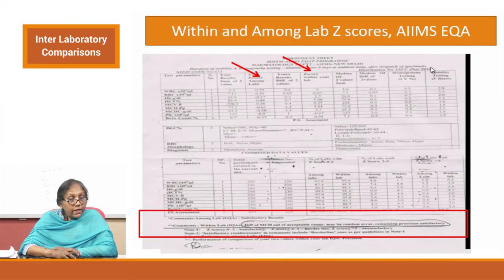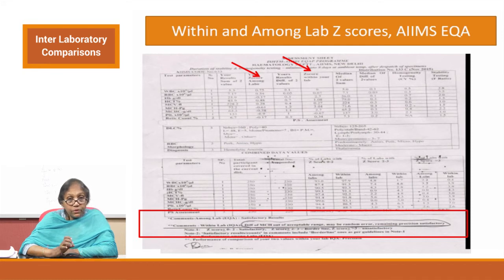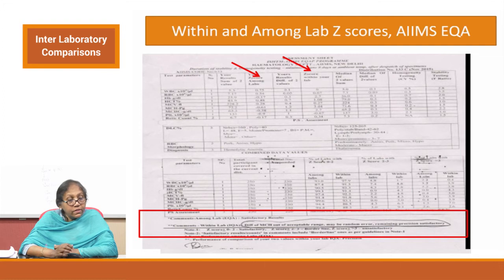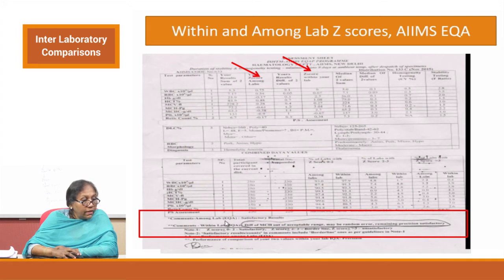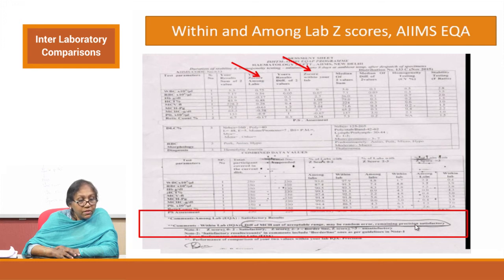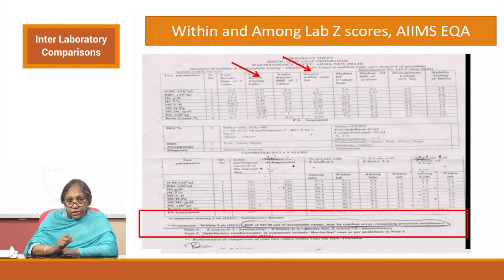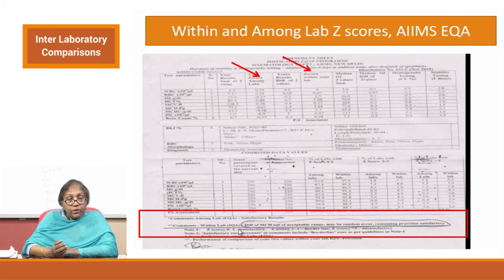This report is from the AIIMS EQAS program for CBC analysis. It provides a Z score among labs and a Z score within the lab — this particular EQAS asks for 2 or 3 runs, calculating the intra-run percentage difference. This gives you a comment on precision in addition to accuracy via Z score. The report comments: EQAS satisfactory results, while noting that the internal quality assurance difference of MCH is beyond the acceptance range and may be a random error; rest of precisions are satisfactory.